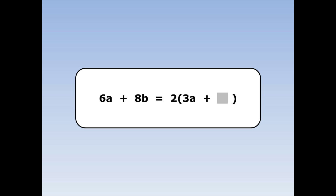Next, 2 times something is 8b. What is that something? The answer is 4b. 2 times 4b equals 8b.